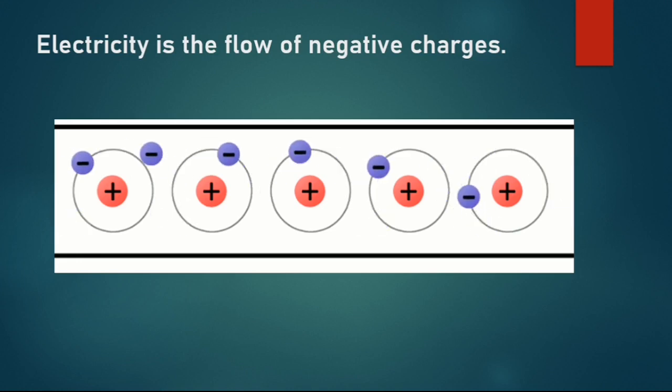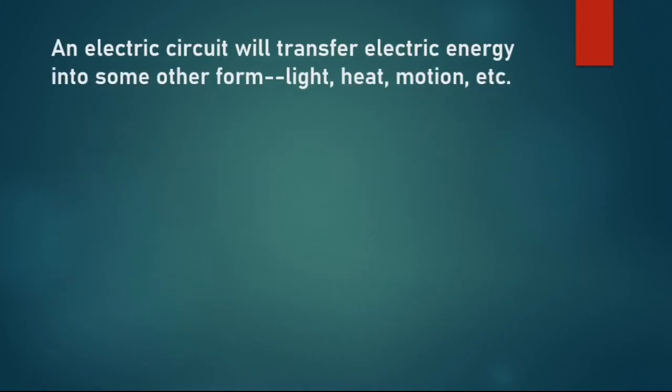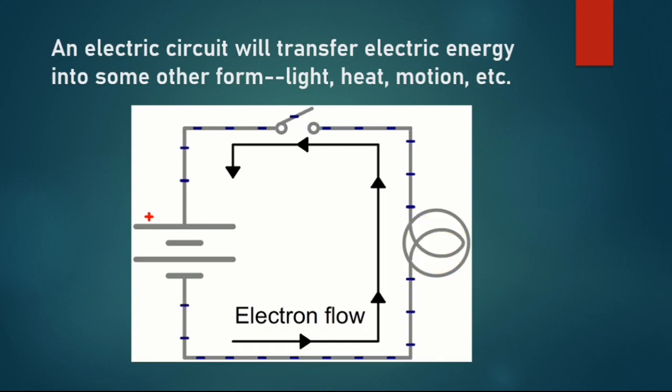Now, after we have created electricity, let's build a circuit that does something useful. Generally, an electric circuit will transfer electric energy into some other form—light, heat, motion, etc. If we connect a light bulb to the battery with wires in between, we have a simple functional circuit.